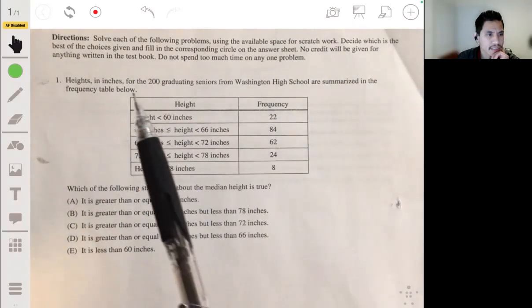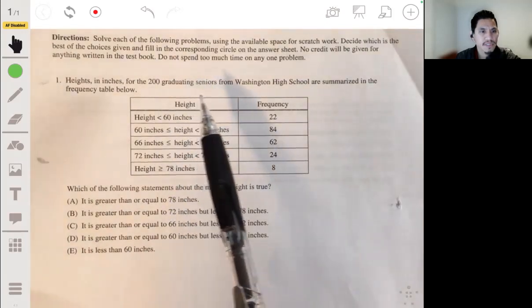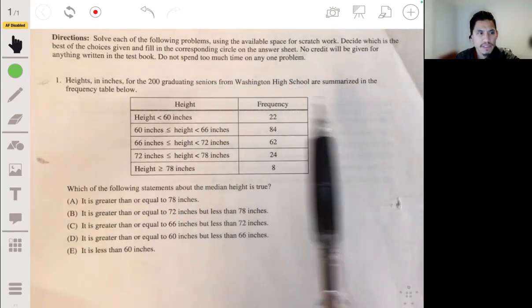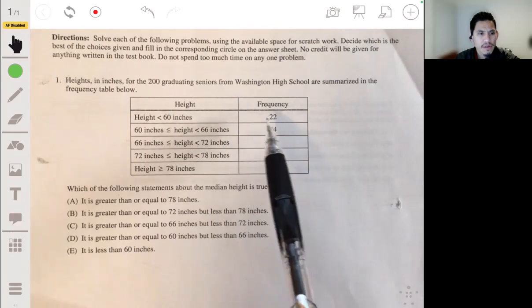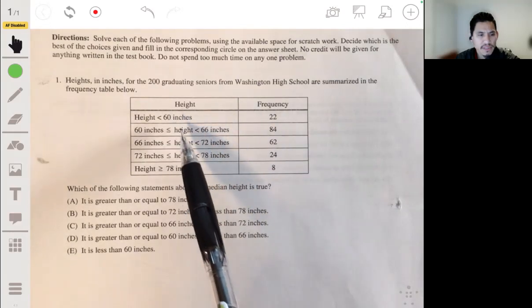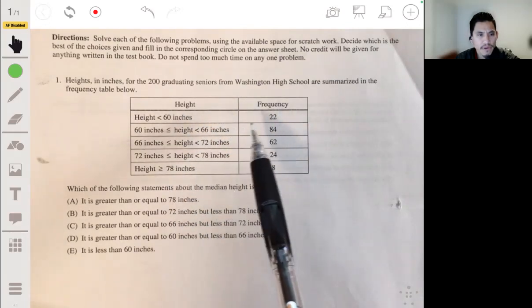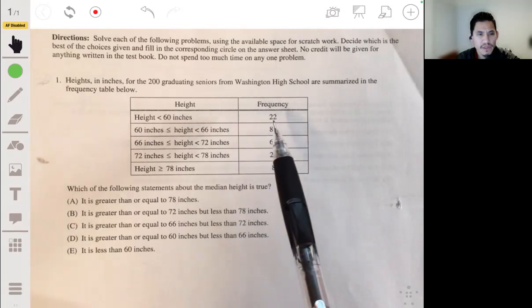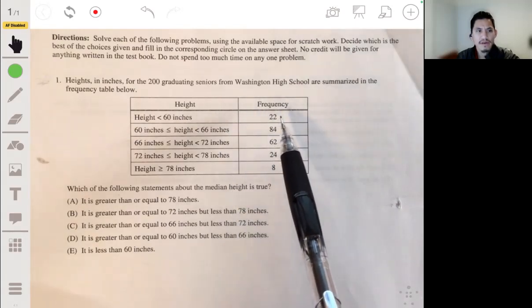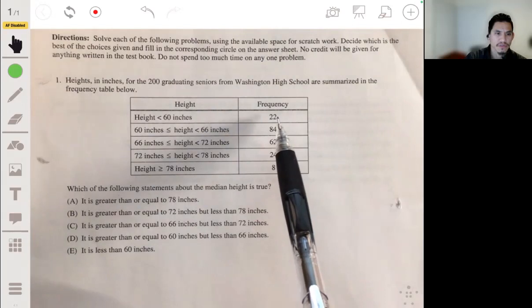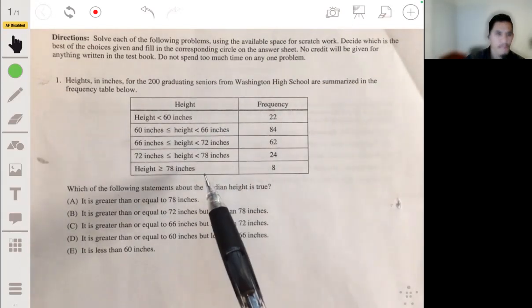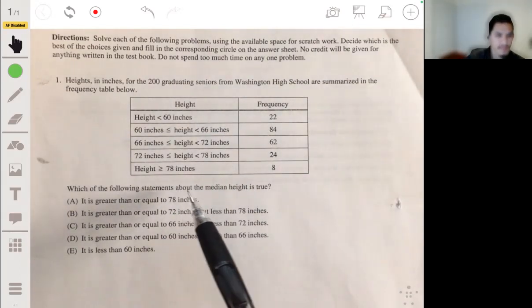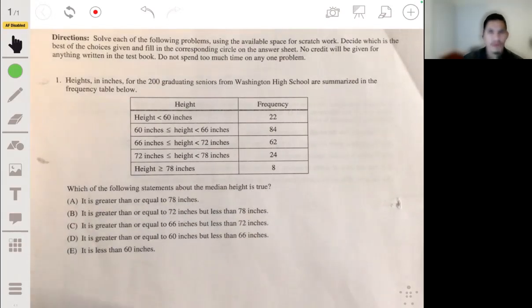All right, problem one. We have the heights in inches for the 200 graduating seniors from Washington High School are summarized in the frequency table below.